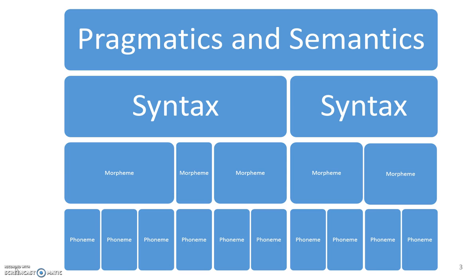Pragmatics and semantics cover how signs are used and how signs form meaning in the big picture. Syntax looks at how signs are put together to form sentences. Morphemes look at the parts of signs that have meaning, and phonemes look at the parts of signs that don't mean anything — they are the building blocks of the signs. Right now that may not make a lot of sense, but don't worry, it will as we move forward.